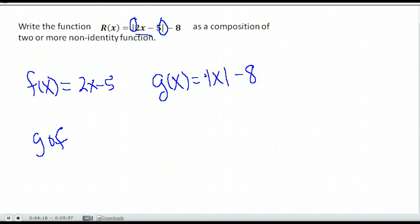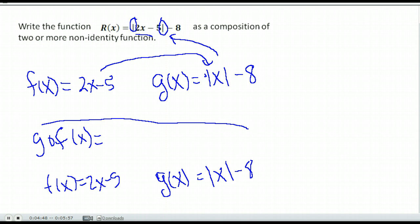And so now I've provided what I need. If I did g of f of x, notice if I did g of f of x I would get exactly this. If I put the 2x minus 5 right there, I have my original function. So my answer is g of f of x with f of x being 2x minus 5 and g of x being absolute value of x minus 8.